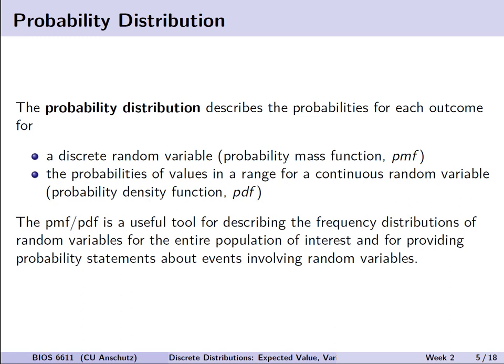The probability distribution describes the probabilities for each outcome. For discrete random variables — which we're talking about this week — we call these probability mass functions or PMFs. For continuous random variables, covered next week, we use probability density functions or PDFs. The PMF or PDF is a useful tool for describing the frequency distributions of random variables for the entire population of interest, and for making probability statements about events involving random variables.